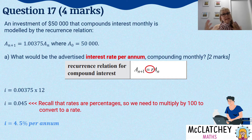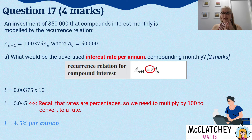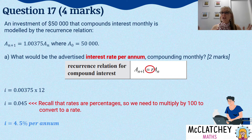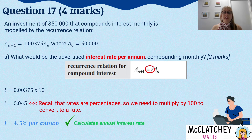There are a few skills being demonstrated here. You need to understand the difference between R and I, that the R value is a compounding rate per period — never per annum unless the compounding period is annual — and how to convert a decimal into a percentage. That's our second mark for this question: providing an annual interest rate as a percentage.